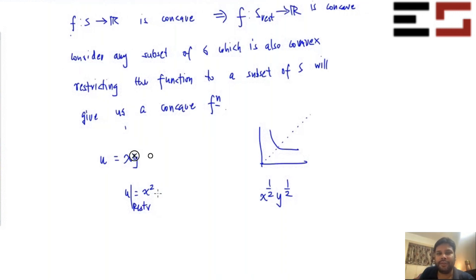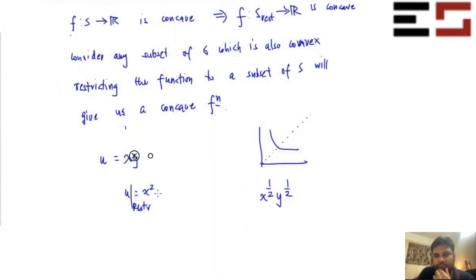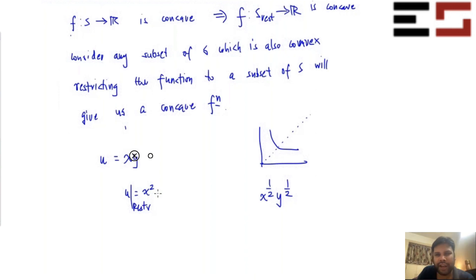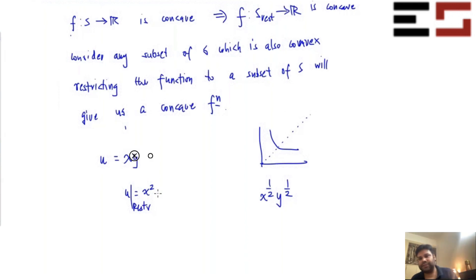This is a very useful trick. And what I just did for concave functions is also true for convex functions — restricting the domain of a convex function keeps it convex. Similarly, restricting the domain of a quasi-concave function keeps it quasi-concave. These are all essentially one-line proofs following from the definitions. Any questions? Okay.